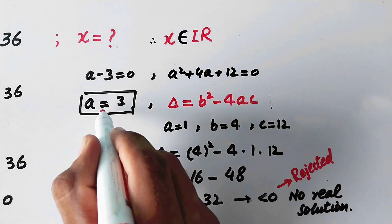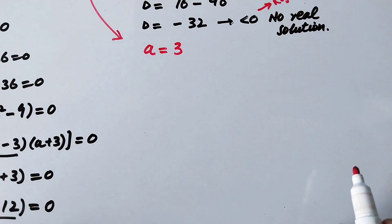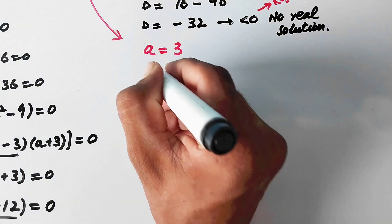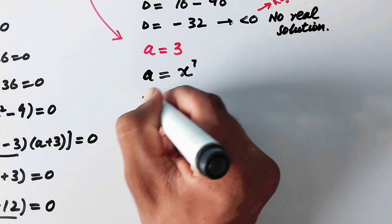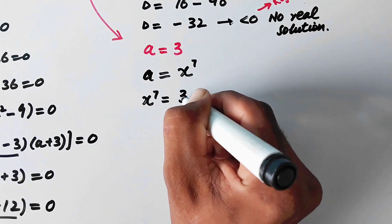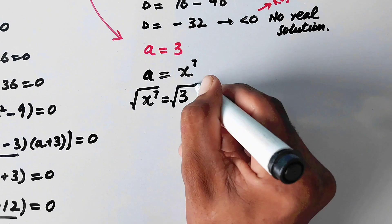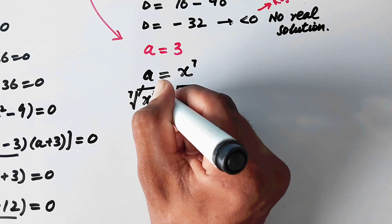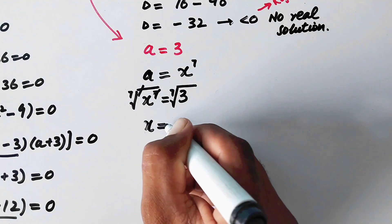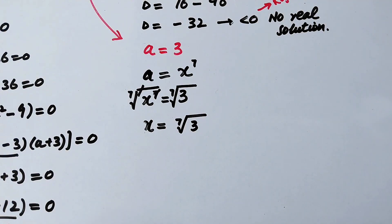We proceed with the value a equal to 3. Since we supposed a equal to x raised to power 7, we can write x raised to power 7 equal to 3. We take the 7th root on both sides; the 7th root cancels the power 7, and we are left with x equal to the 7th root of 3. That is the value of x.